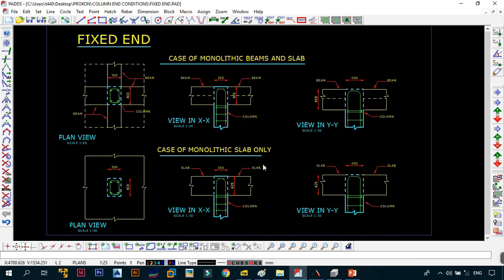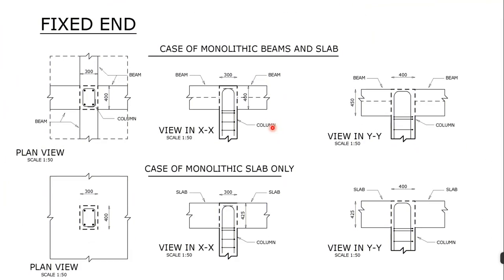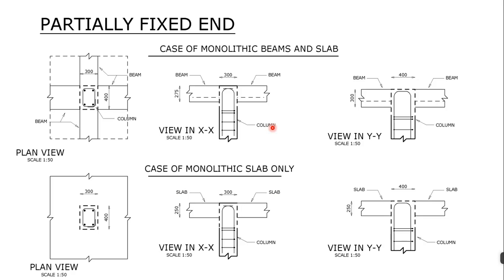Now we look at the partially fixed end condition. An end of a column is considered partially fixed if the end of that column is connected monolithically to beams or slabs which are shallower than the overall column dimension in the relevant plane. Let's go to ProCon Pads for a clearer illustration with colors.